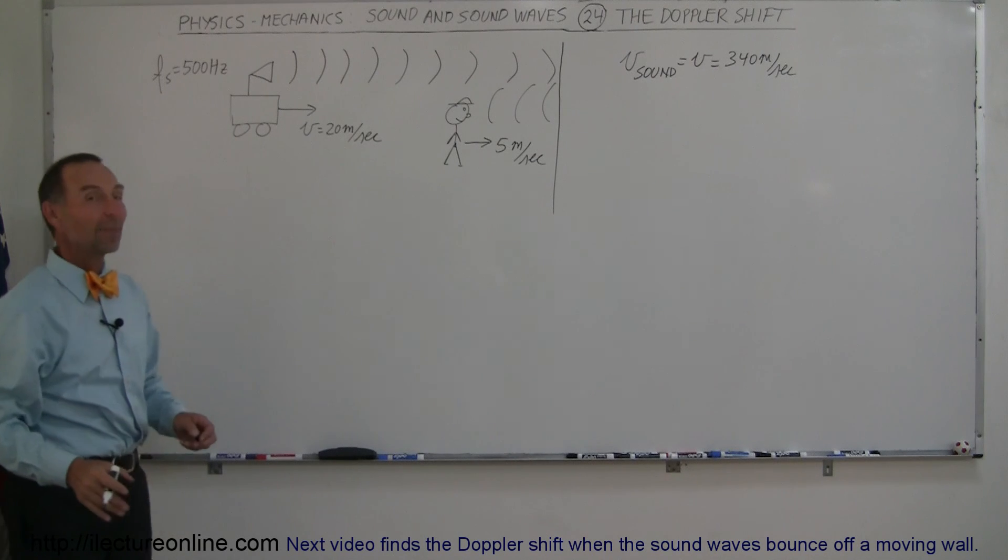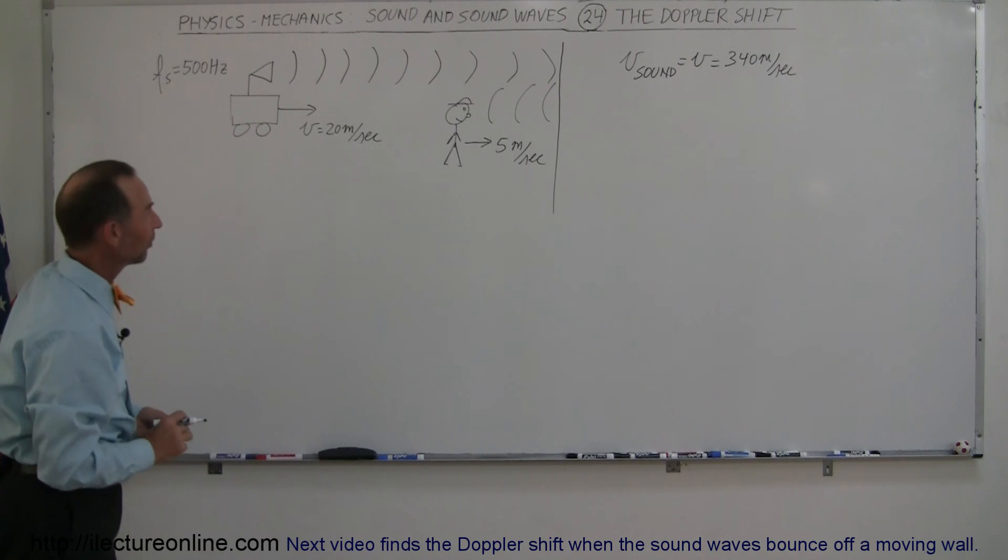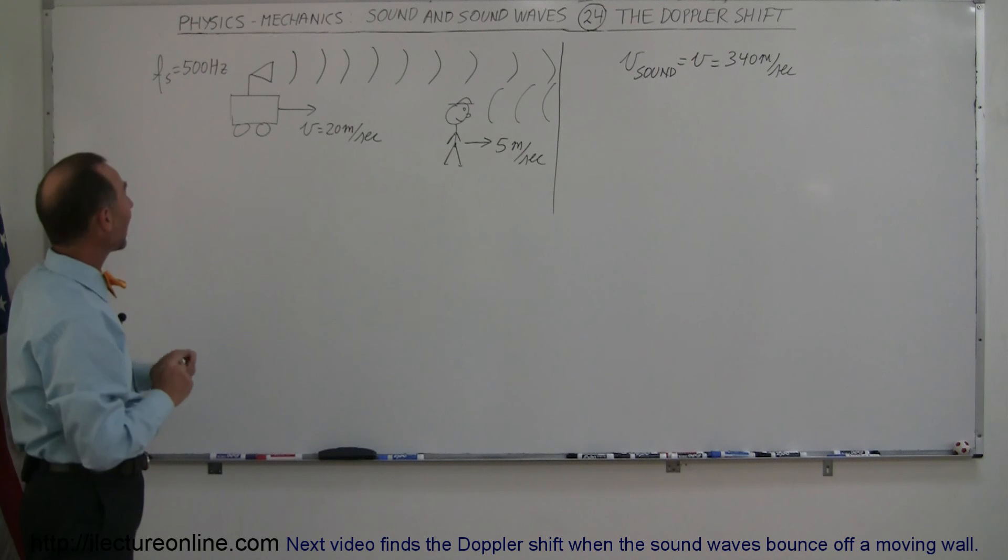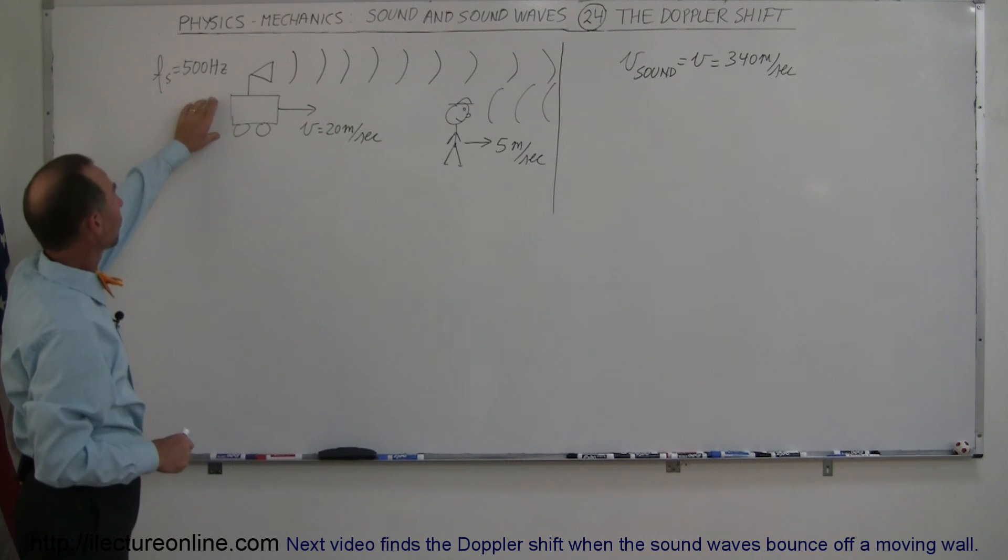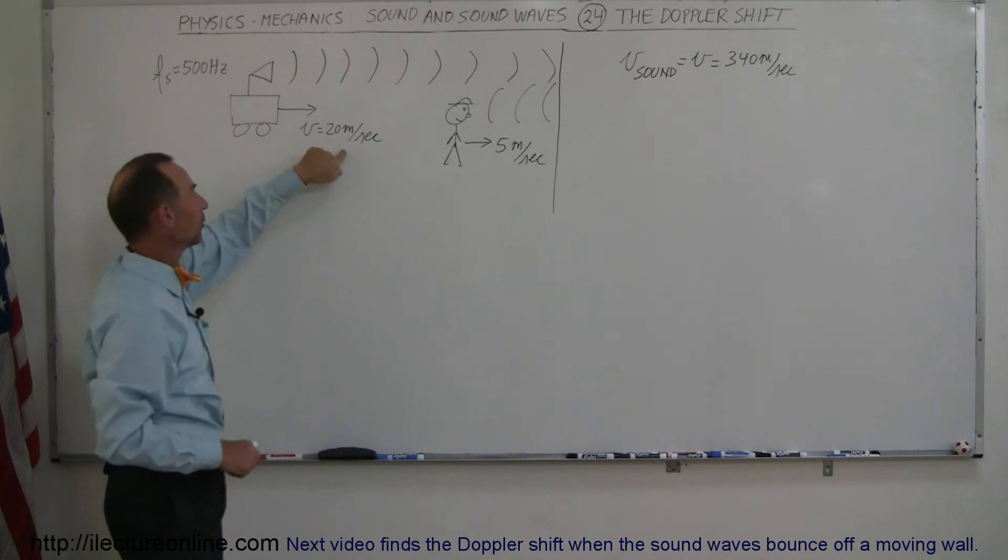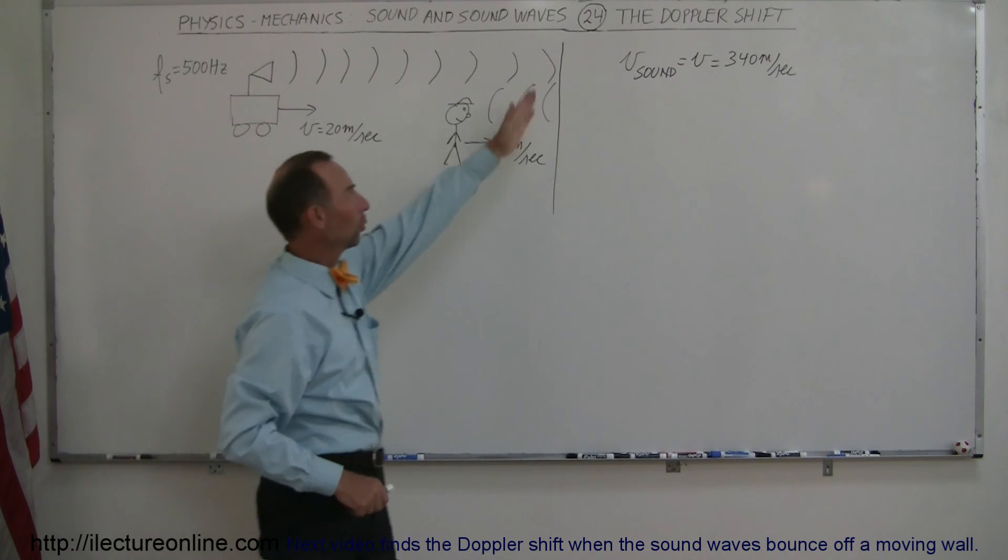Here's another interesting example of how to handle the Doppler shift. What's happening is we have a source with a frequency of 500 hertz moving at 20 meters per second towards a big wall right here.